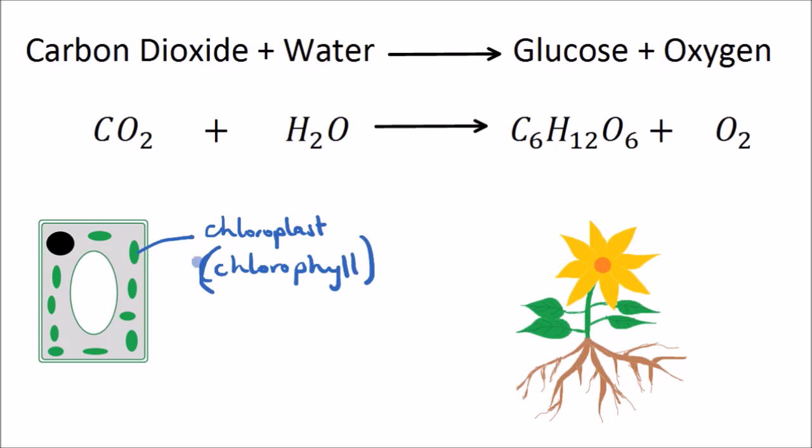It's inside the chloroplasts that plants make their food by photosynthesis. The raw ingredients that plants use are carbon dioxide and water. They get carbon dioxide from the air, absorbed through their leaves, and they get water from the ground through their roots.